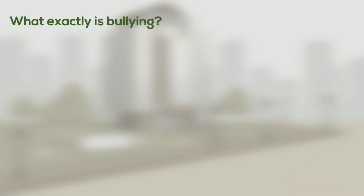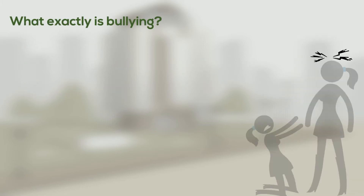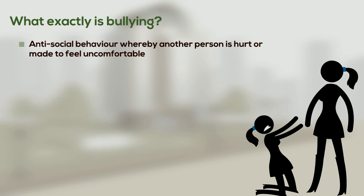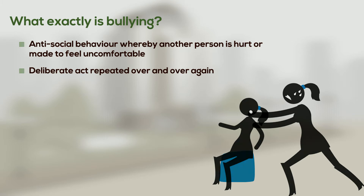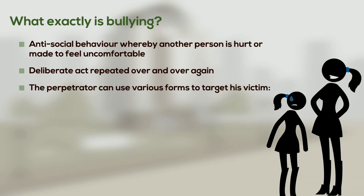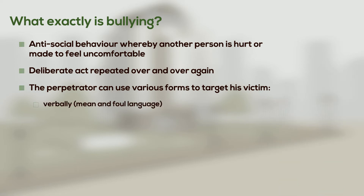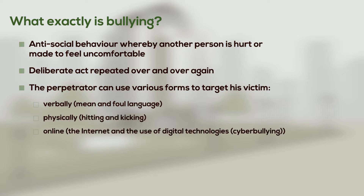What exactly is bullying? Bullying involves displaying antisocial behaviour, whereby another person is hurt or made to feel uncomfortable. This is generally a deliberate act repeated over and over again. The perpetrator, the bully, can use various forms to target his victim, the person being bullied. This can be done verbally, through mean and foul language; physically, by hitting and kicking; and even online, through the internet and through the use of digital technologies, otherwise known as cyberbullying.